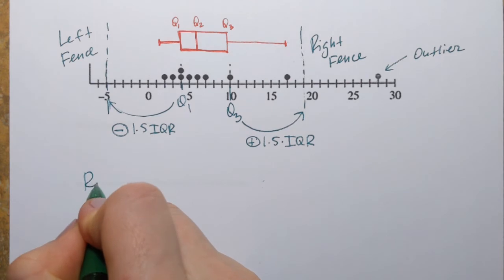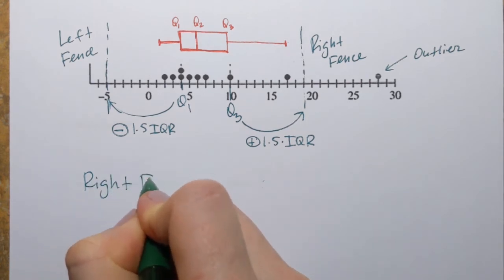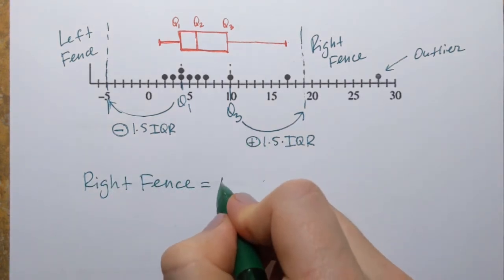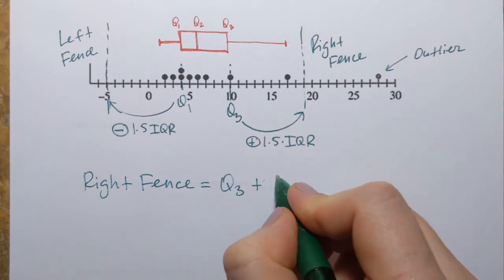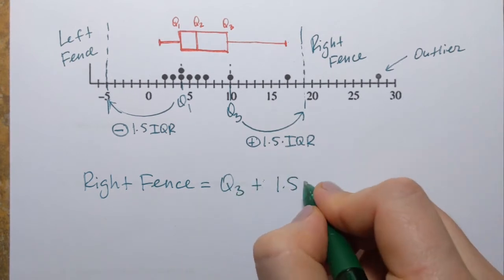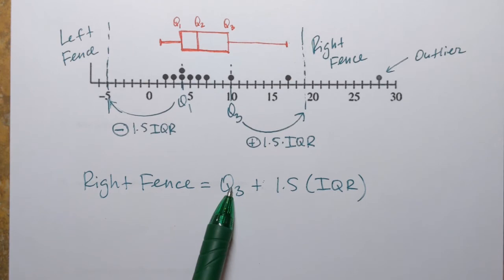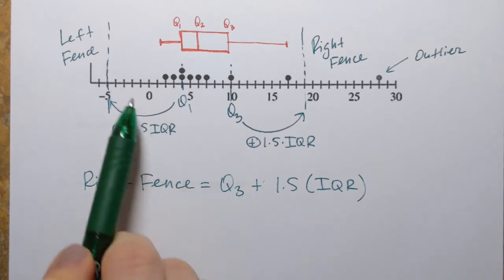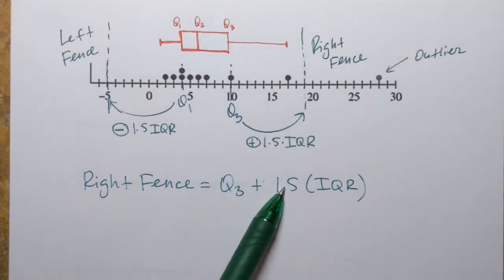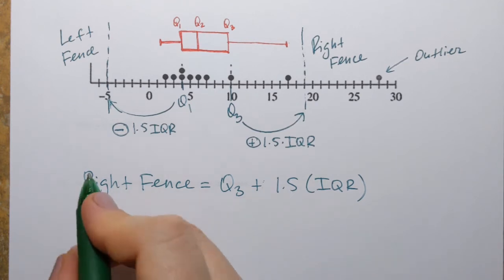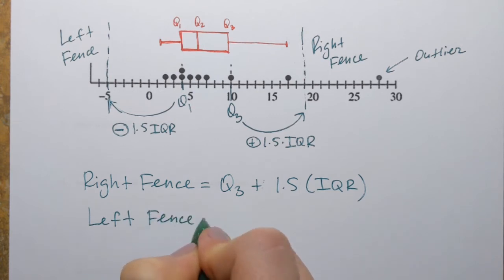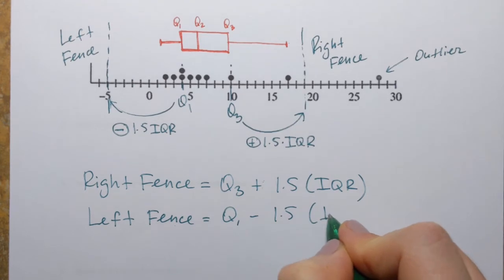So to find the right fence, I will be taking Q3 and adding 1.5 IQR. And 1.5 is always there. So Q3 will be different for different data set. IQR will be different depending on your data set. But 1.5 always stays. That number is part of the formula. And then the left fence is Q1 minus 1.5 IQR.